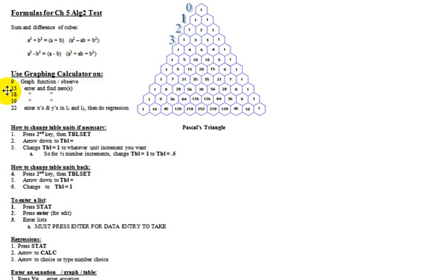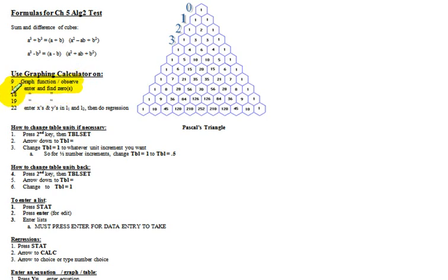We've done number 9 — graph and observe. For number 15, you're just going to enter the equation and find the zeros. You do the same thing for 18 and 19: just enter the equation and find your zeros.